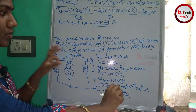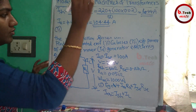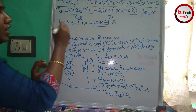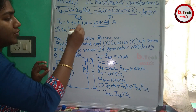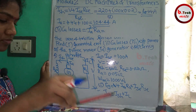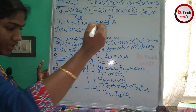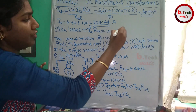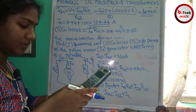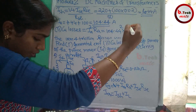Now we calculate the copper loss. The copper loss equals IA squared times RA. IA squared times 0.05 gives an answer of 545.38 W.